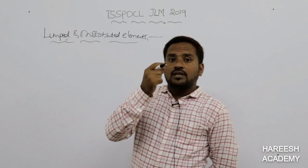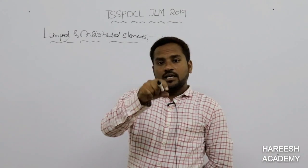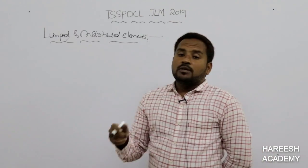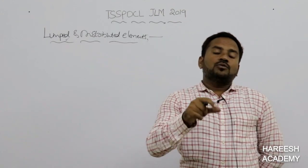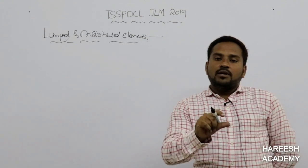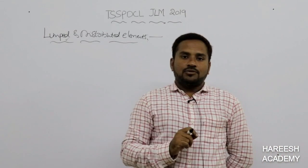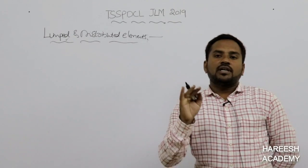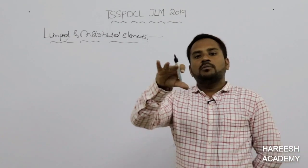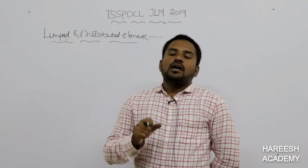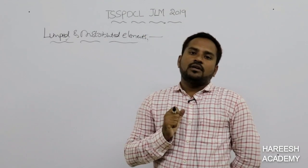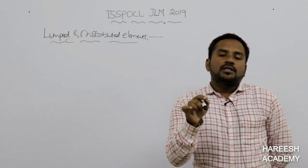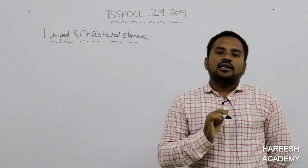These are called lumped elements — resistors, inductors, and capacitors that we can physically see in a laboratory or shop. Distributed elements, on the other hand, are elements which do not exist as discrete physical components; we can only feel their effect.